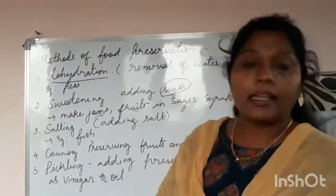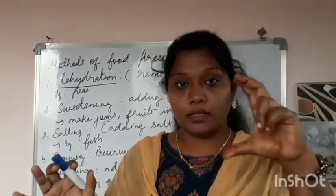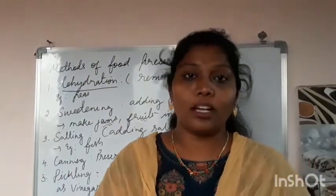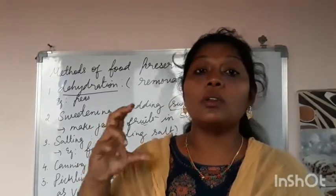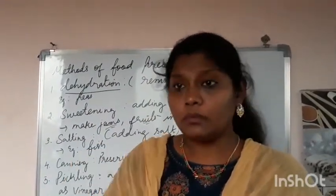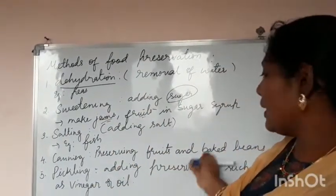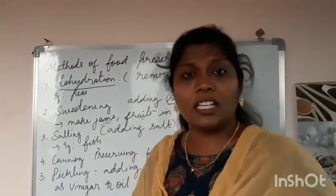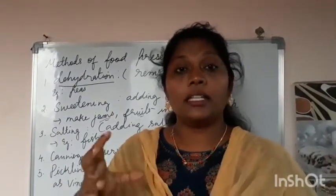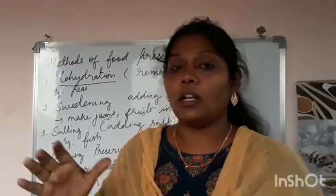Next comes canning. Canning means nowadays if you go to the supermarket, we find varieties of food materials in cans. All the foods have been canned. For example, rasagullas are packed in sugar syrup and put in airtight cans. Many food items like fruits, baked beans, and sardines — a kind of fish — are canned foods preserved for longer periods of time. They add sauces, chili sauce, and different kinds of sauces to the sardines and pack the food in a can so that it can be preserved for a longer period of time.